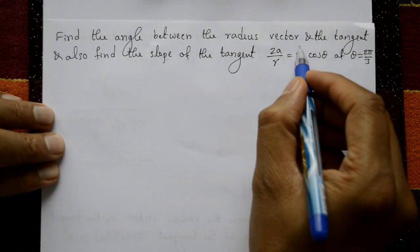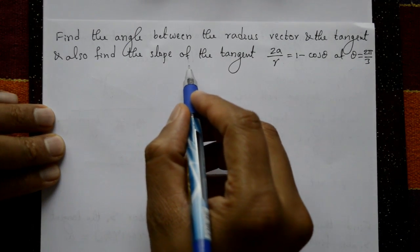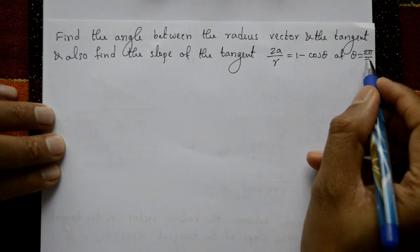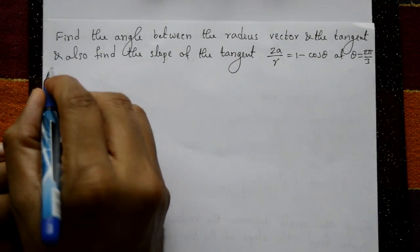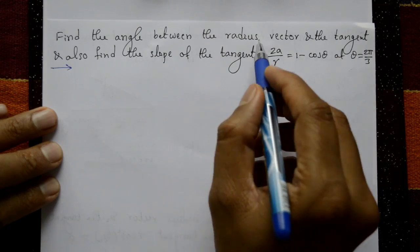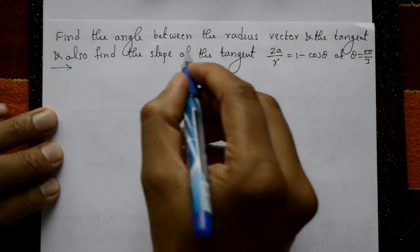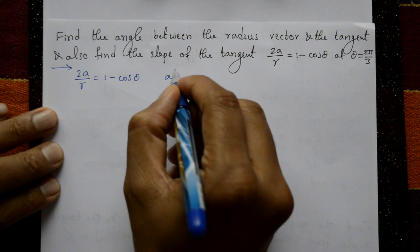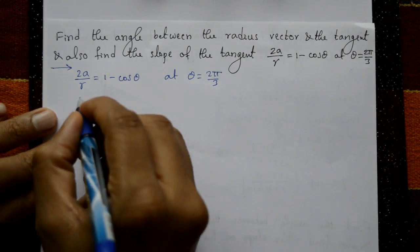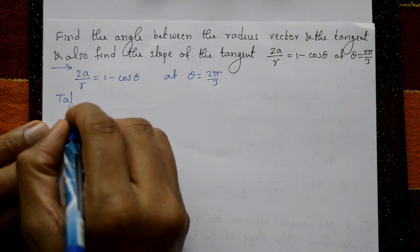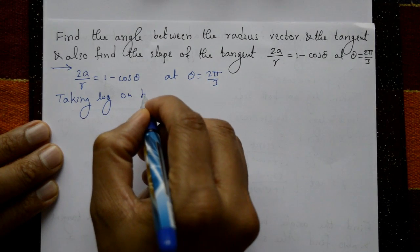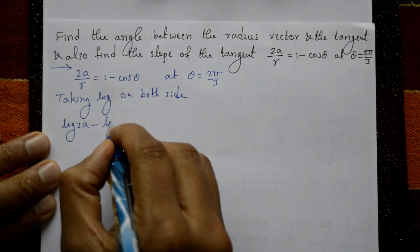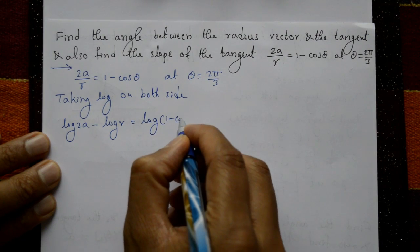Find the angle between the radius vector and the tangent, and also find the slope of the tangent. Given curve: 2a/r = 1 − cos θ at θ = 2π/3. First find angle φ between the radius vector and tangent, then the slope. Taking log on both sides: log(2a) − log r = log(1 − cos θ).